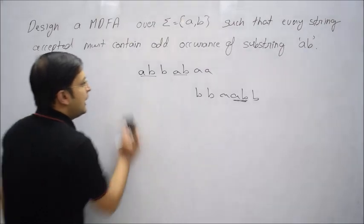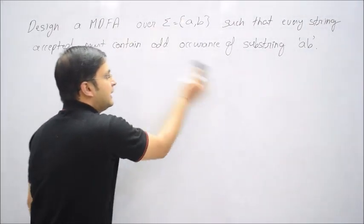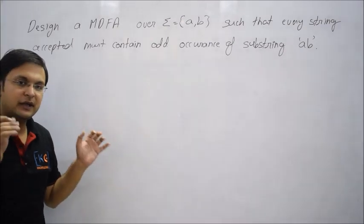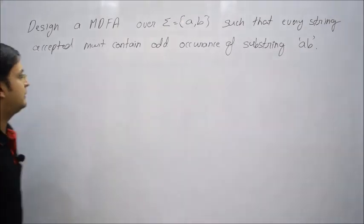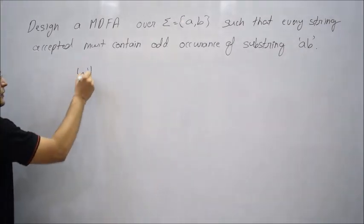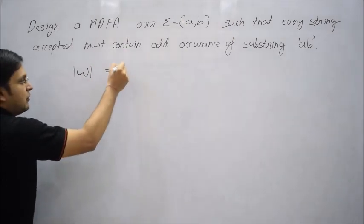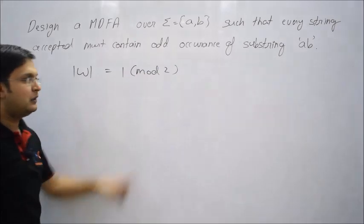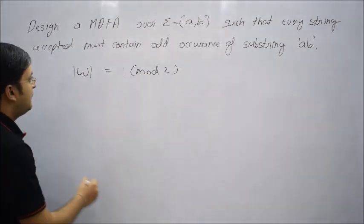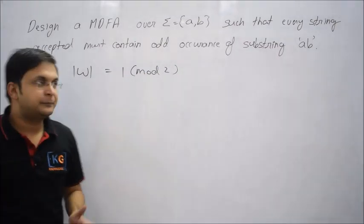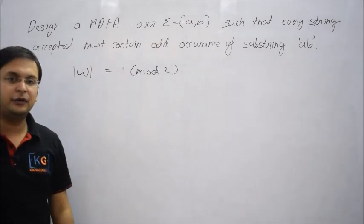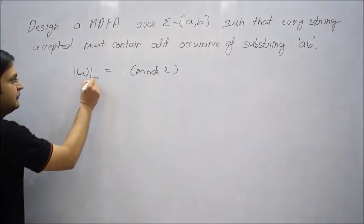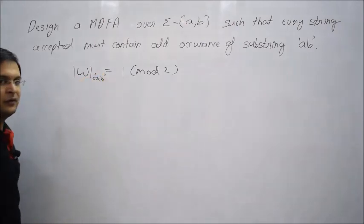Now, how can we design this logic? Because odd and even can also be converted using mod method. Odd they are talking about. So if you divide any number with 2, then you will get 1 for odd number.